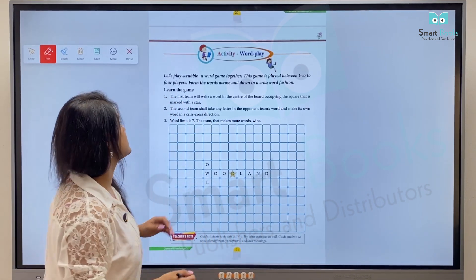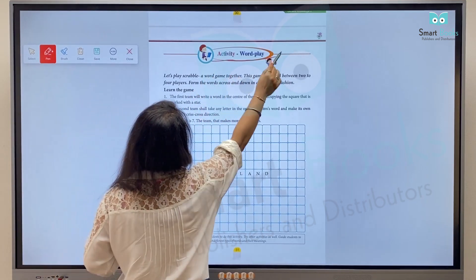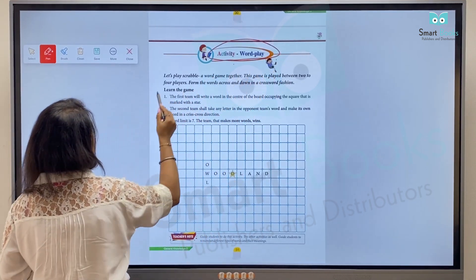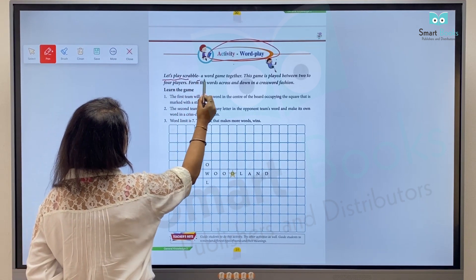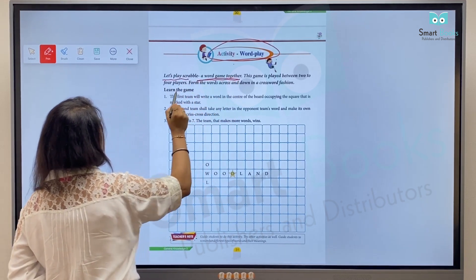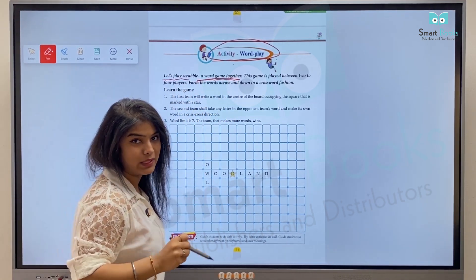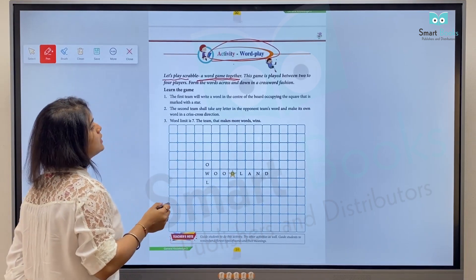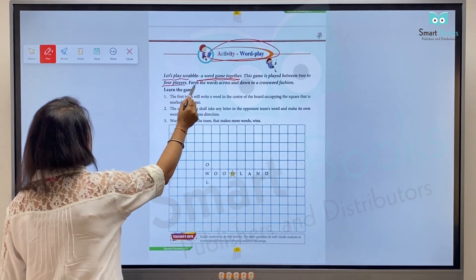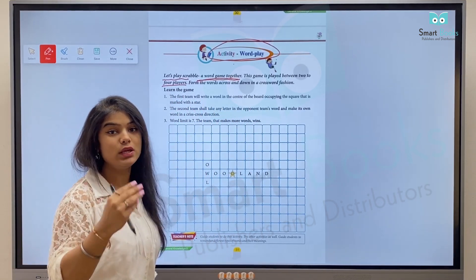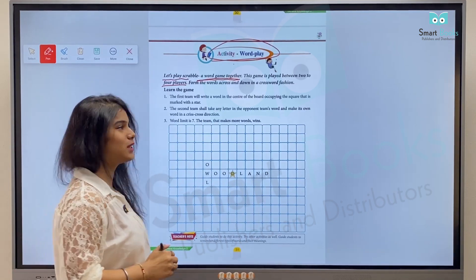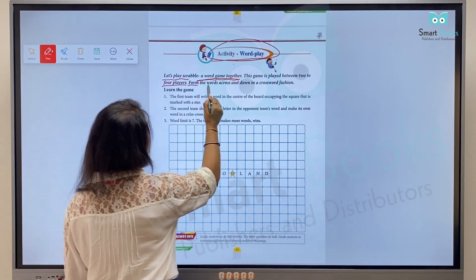This is Activity Word Play, right? Let's do that. Let's play Scrabble, a word game together. This game is played between two or four players.